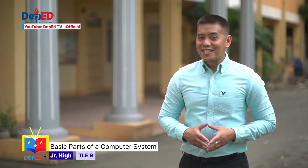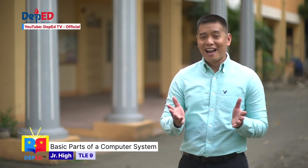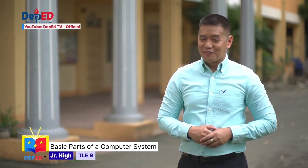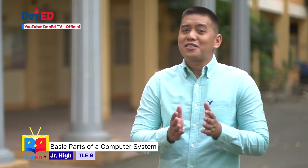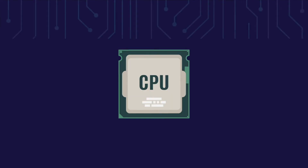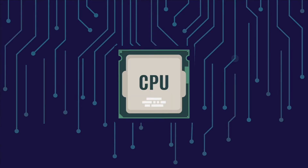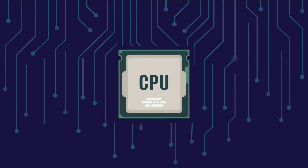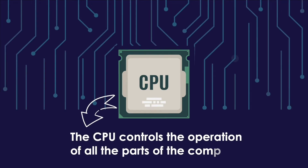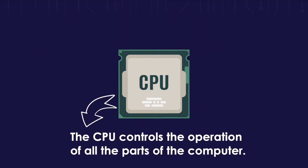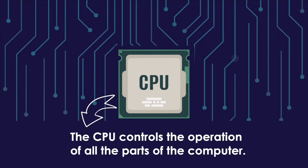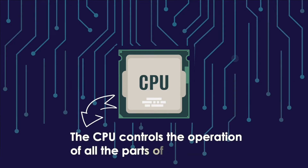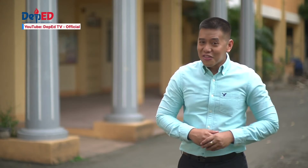Let us now check some of the parts found inside the system unit. First, we have the CPU or central processing unit. The central processing unit is also called a processor and is considered the brain of the computer because it controls the operation of all the parts of the computer. The purpose of a processor is to perform the actual calculations done by the computer — they carry out millions of calculations per second. It's quite impressive when you think of it!